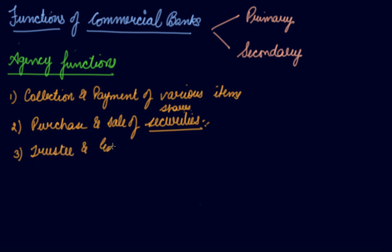The third agency function is trustee and executor. Sometimes the bank gives a guarantee for a particular customer. The bank also acts as trustee and executor of the property of their customers on their advice.